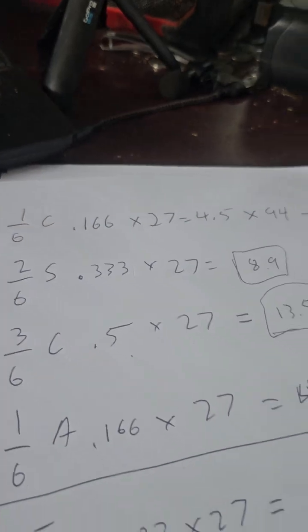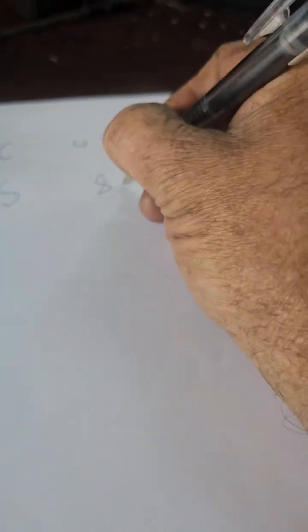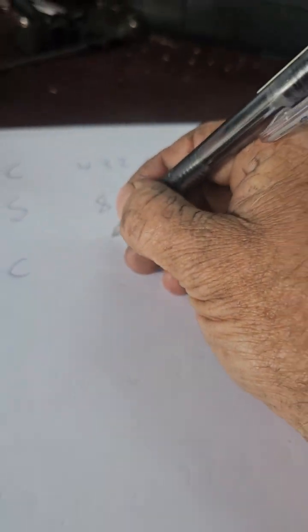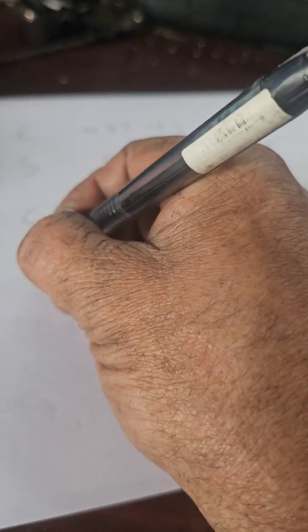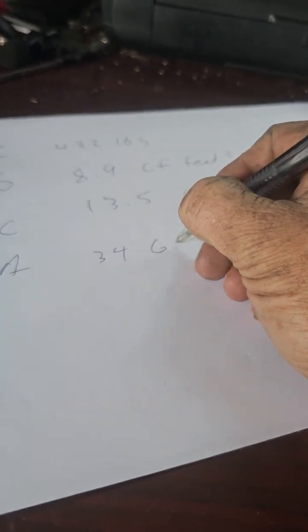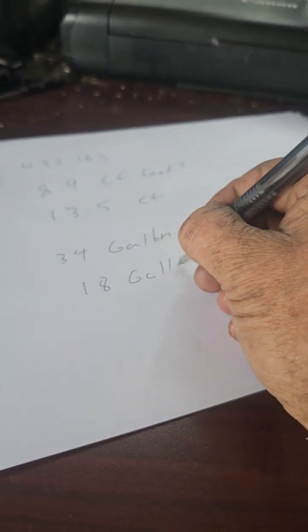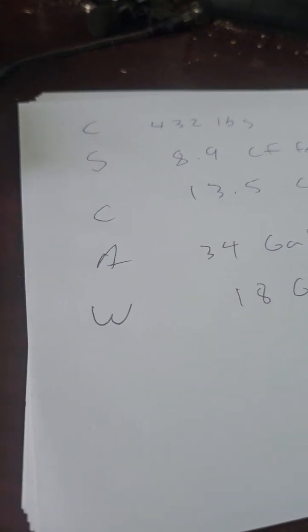So there you go. You now have your measurements. To make one cubic yard, we need for cement mix 432 pounds, for sand 8.9 cubic feet, for gravel 13.5 cubic feet, for additive 34 gallons, and for water 18 gallons. Quick and simple and easy. Make your own mix, and you don't have to buy pre-mix.